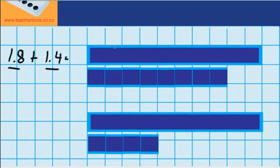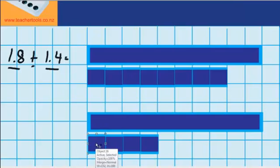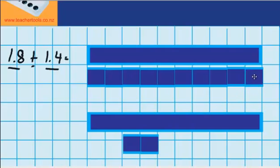Over here you can see I've got my one whole and eight tenths, and here's my afternoon chocolate, one whole and four tenths. Just like last time, I'm going to start by combining my tenths, and I know I'm combining them because it's an addition problem. So I'm going to start by moving these tenths up here to see if I can make one more whole chocolate bar.